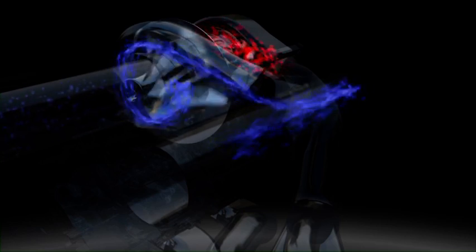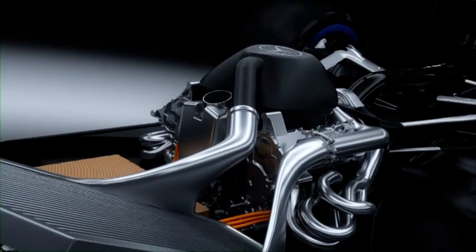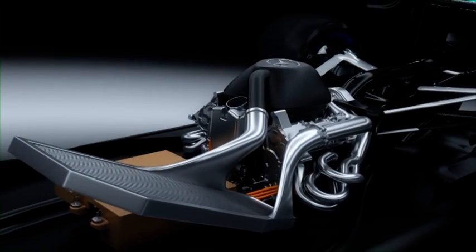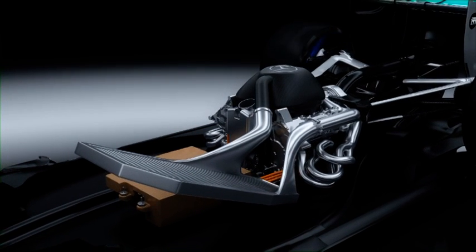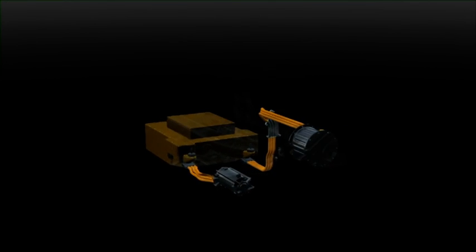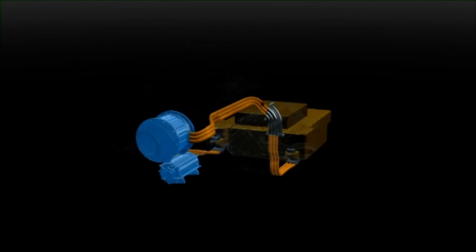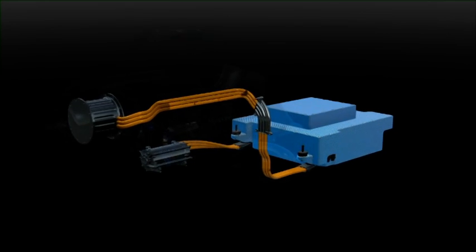Before reaching the air intake, the compressed air passes through an intercooler to increase its power density. The hybrid system is called the energy recovery system. It has two electrical devices called motor generator units and the battery called the energy store.